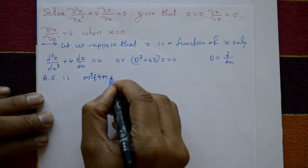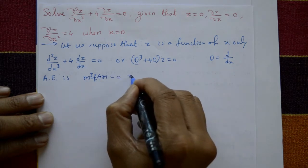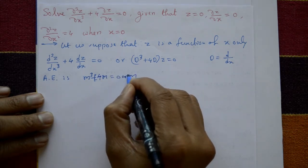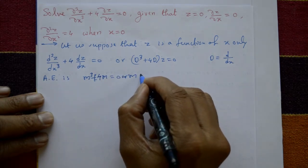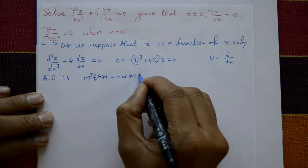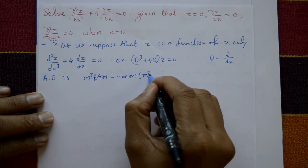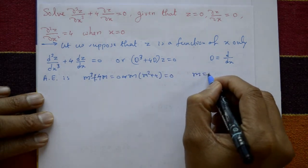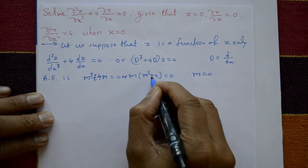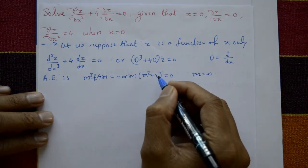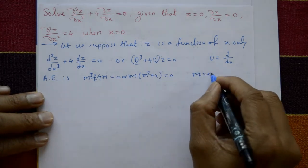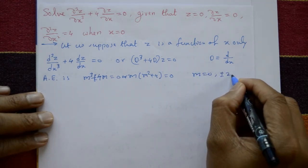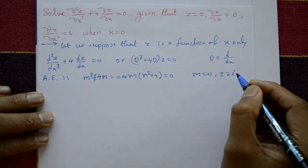From m³ + 4m = 0, factor out m: m(m² + 4) = 0. So m = 0, and m² = −4, giving m = ±2i.